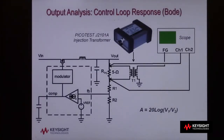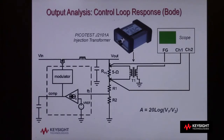A power supply is actually an amplifier with a negative feedback control loop as shown in this diagram. This means that although you may think of a power supply as a DC amplifier, it actually amplifies AC to react to changes in output conditions such as load changes. To perform this test, we must inject an error signal over a band of frequencies into the feedback path of the control loop. The resistive divider network of R1 and R2 is the feedback path in this diagram.